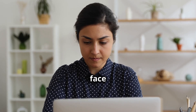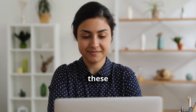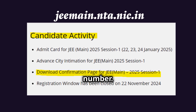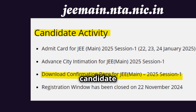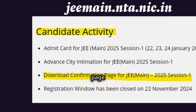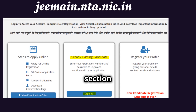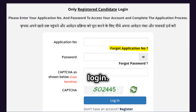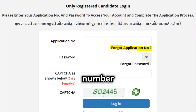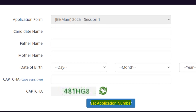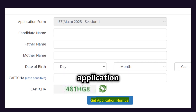The next issue some candidates face is that they forgot their application number, so they are unable to download the admit card. Just relax and follow these simple steps to get your application number. First, go to the official NTA website. Next, go to the Candidate Activity section. Then click on the link to download the confirmation page for JEE Main. This will take you to the next page, where you go to the section for Already Existing Candidate, and click Login. When you are in the Candidate Login page, you can get your application number by clicking on Forgot Application Number. This will take you to another page where you can fill out all the required details and get your application number.